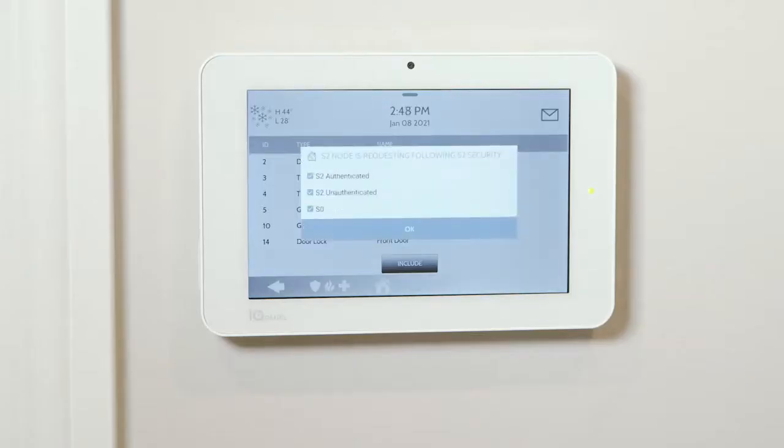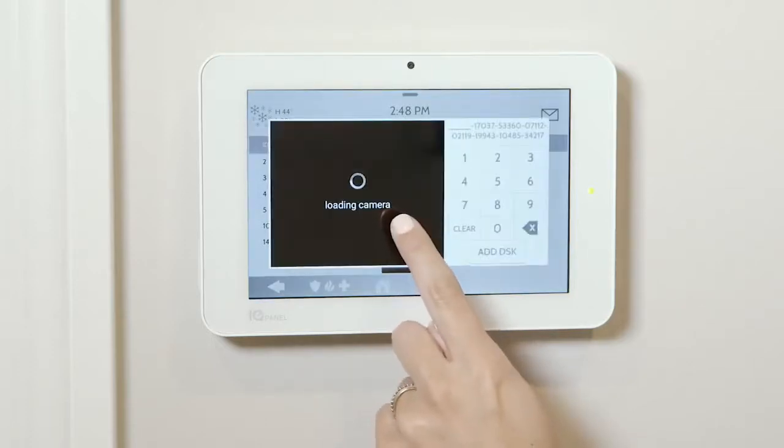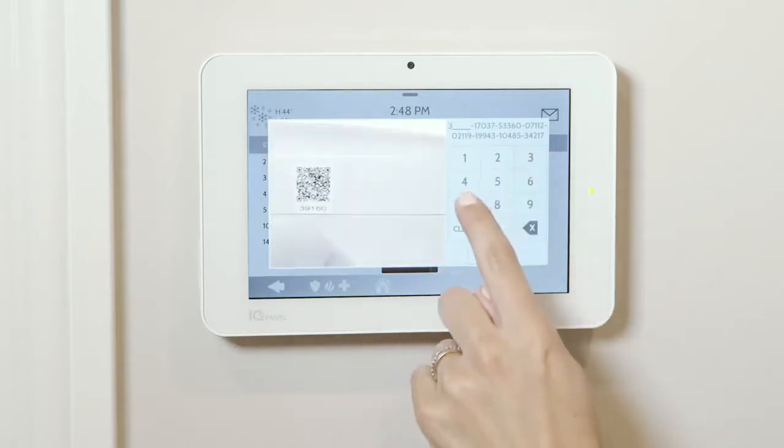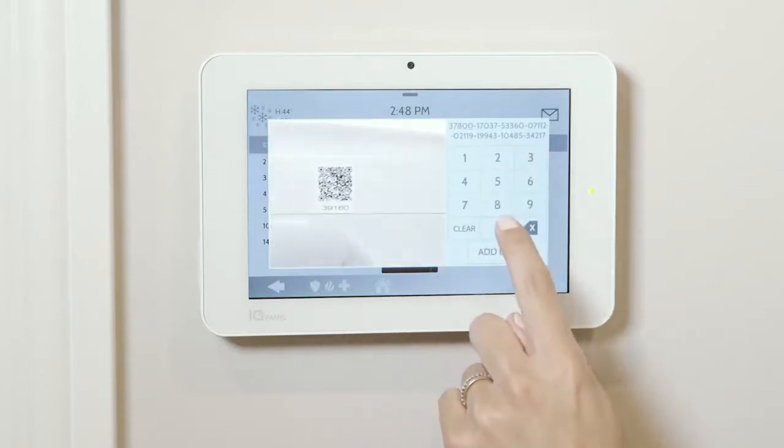Select desired encryption type. If using S2 authenticated, enter the first five digits of the DSK or scan the QR code from the box. Customize name and touch add to complete the pairing process.